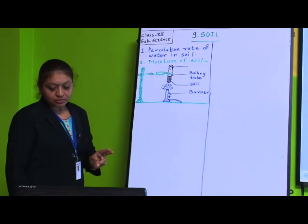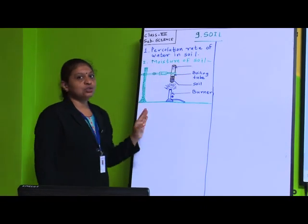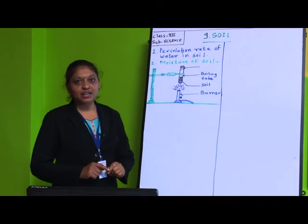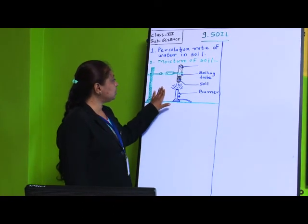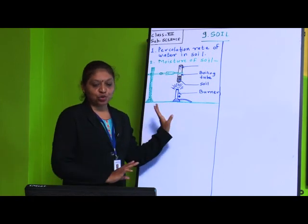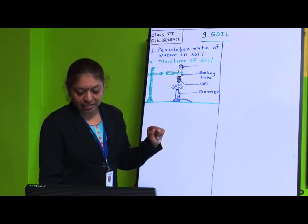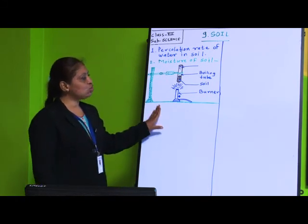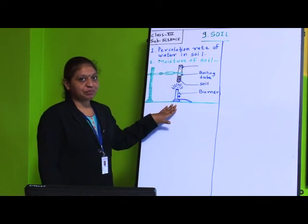The second property of soil is moisture of soil. We have an activity for this in the textbook. I am going to explain how we can do this activity, what results you will observe, and you will get an idea of moisture of soil after this activity.